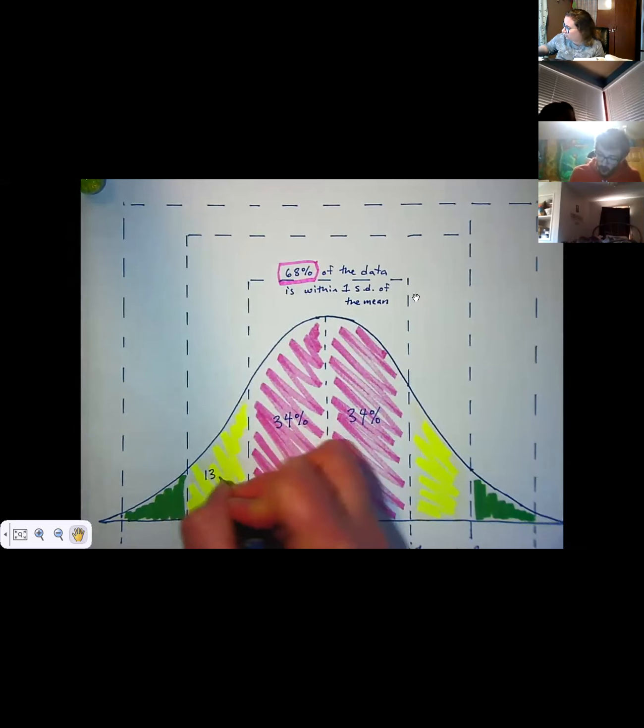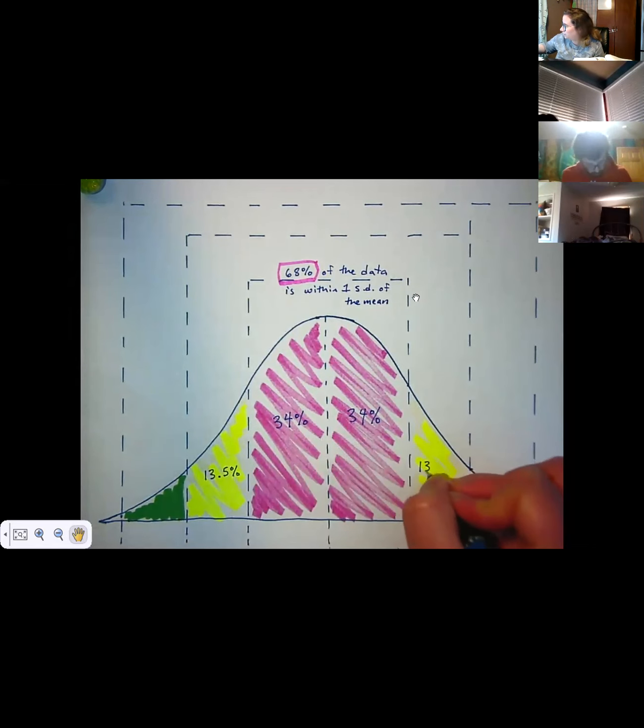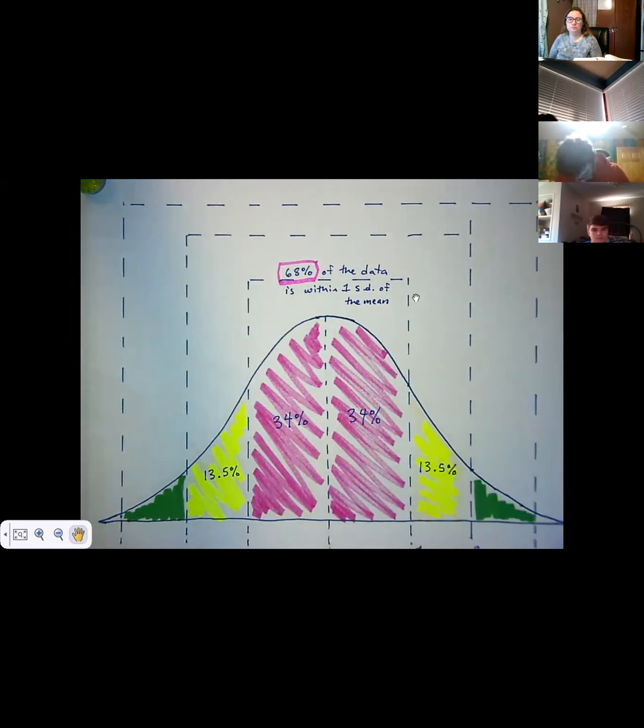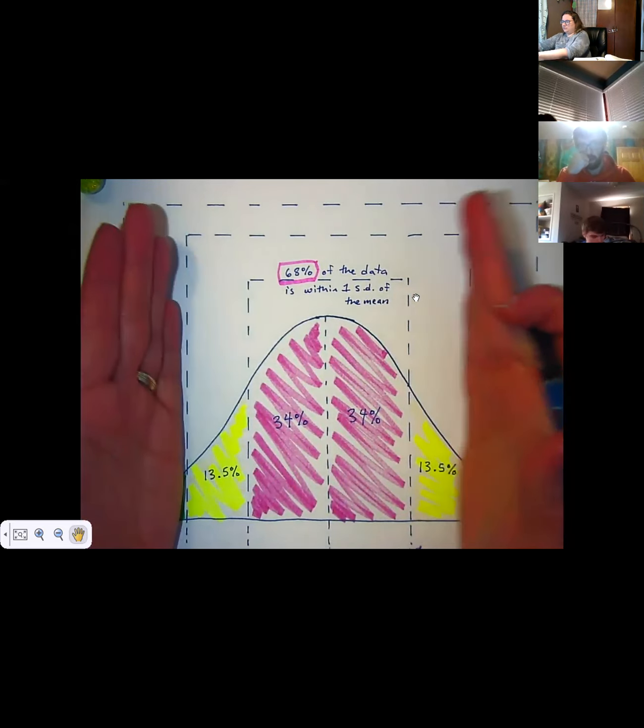You don't have to use colors if you don't want to. Over here in the yellow is 13.5% on both sides. This is always the case, by the way.